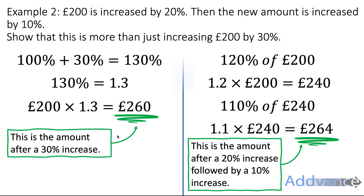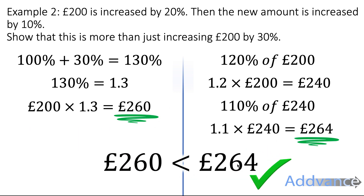So £260 is the amount after just a 30% increase, but £264 is the amount after a 20% increase and then a 10% increase. In the comments I'd like you to tell me why the second amount is bigger — why do you think increasing by 20% and then 10% is bigger than increasing by 30%? The question asked us to show this is more than just increasing by 30%, and we've done that by showing the stepped increase gives a bigger number.